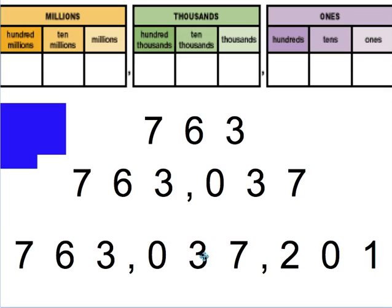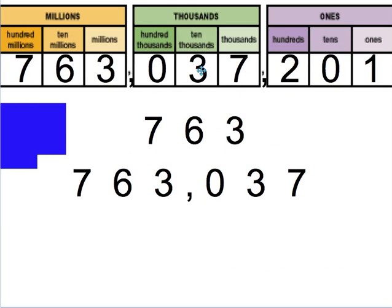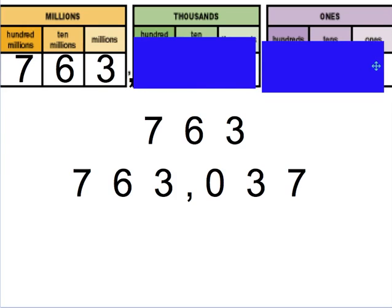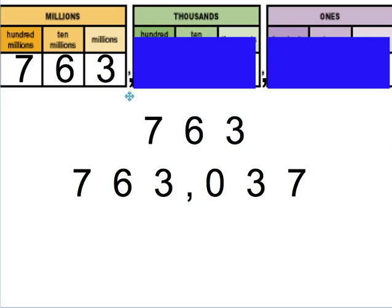Altogether we have 763,037. Even really big numbers like this can be read following the same procedure. Notice here I have the millions period, the thousands period, and the ones period. You always start with what's furthest to the left, the biggest period that you have. I can ignore everything else. Again, I have my 763, and it's in the millions period, so when I get to that comma, I'm going to say millions. This would be read as 763,000,000.